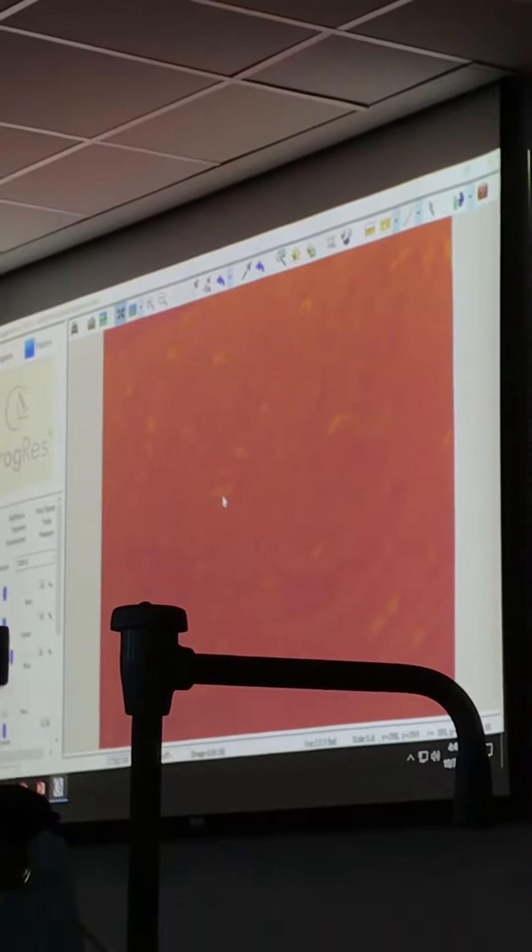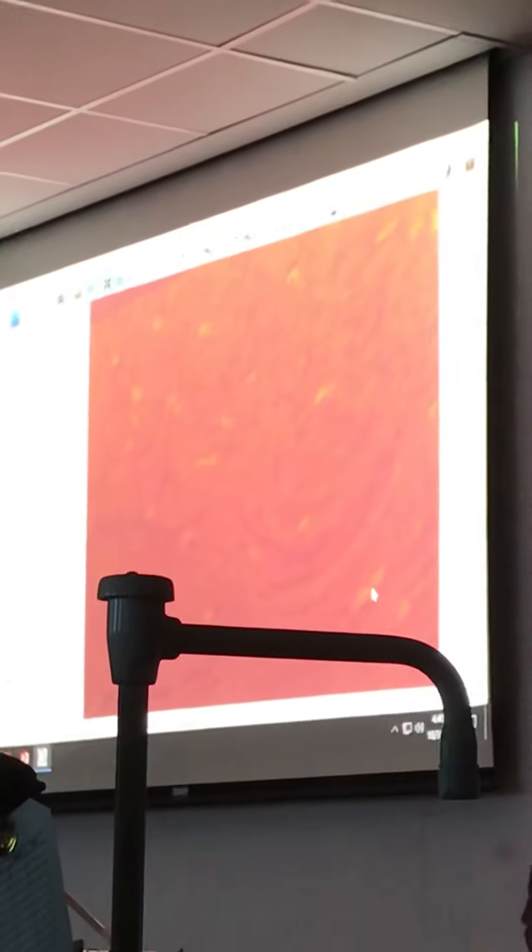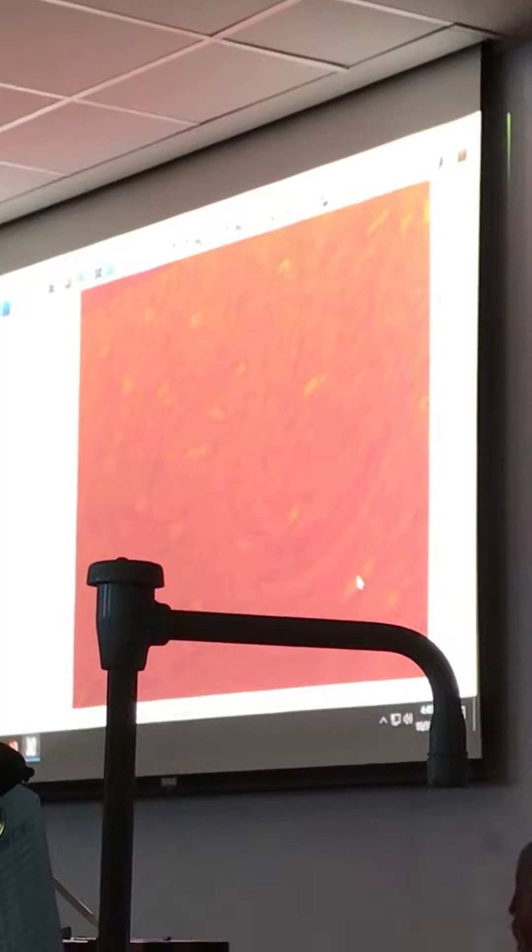This is one node of Ranvier that you can see distinctly. You can see another node of Ranvier right here, but again you see the myelin sheath kind of coming together, bunching up right here.